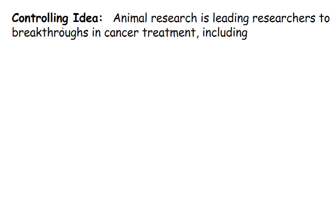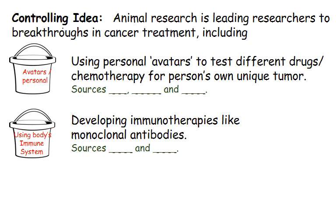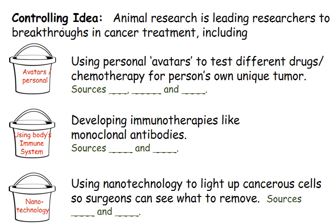For example, if you were doing a project on cancer research, your controlling idea might be that animal research is leading to breakthroughs in cancer treatment — including one paragraph about personal avatars, one about using the body's immune system through immunotherapy, and another about technology. Your goal right now is to take your research notes, decide what the major breakthroughs are, put your different sources into buckets, decide the main idea of each bucket, and then ask: what is the controlling idea that unites these? Once you've filled out the bucketing side of the worksheet, you can begin drafting the introduction, the descriptive paragraph, and each body paragraph.